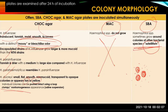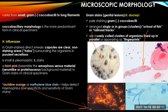For microscopic morphology, as is common with most Haemophilus species, the microscopic morphology varies from small gram-negative coccobacilli to long filaments. The coccobacillary morphology is the more predominant form in clinical specimens. Capsules of H. influenzae may be observed in gram-stained smears as clear, non-staining areas or halos surrounding the organisms in purulent secretions. Because the organism is small, pleomorphic, and often stains faint pink, it can resemble amorphous, serum-like or proteinaceous background material in gram stains.